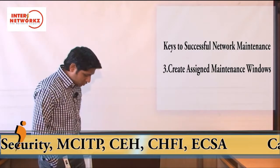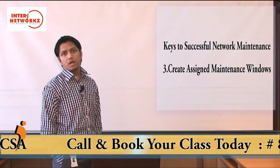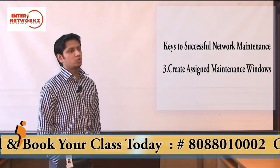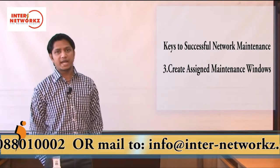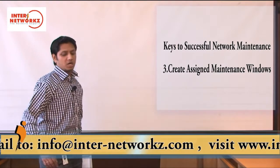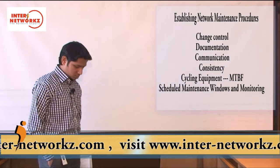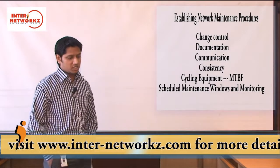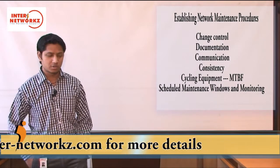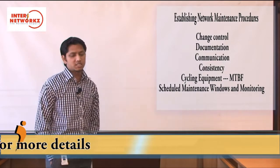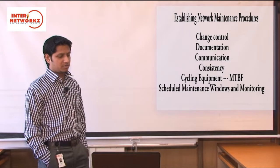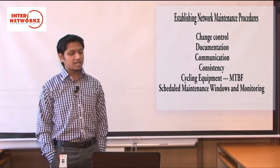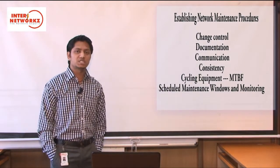Third is creating an assigned maintenance window — also a most important part. You should tell your company the time when you will make changes or do R&D on the network, so normal employees don't find services unavailable unexpectedly. Establishing network maintenance procedures includes: change control, which is balancing people's needs versus network stability; documentation covering equipment lists, WAN connections, and free resources; and communication, which means establishing communication standards so everyone knows what others are doing.